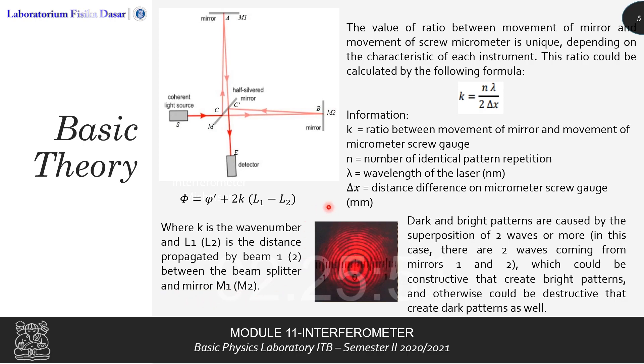However, in this experiment, we are not focusing on the difference of phases, but we focus more on the value of ratio between the movement of the mirror and the movement of the screw micrometer. The ratio is unique, depending on the characteristic of each instrument or tool. This ratio could be calculated by the following formula: K equals N times lambda divided by 2 times delta X.